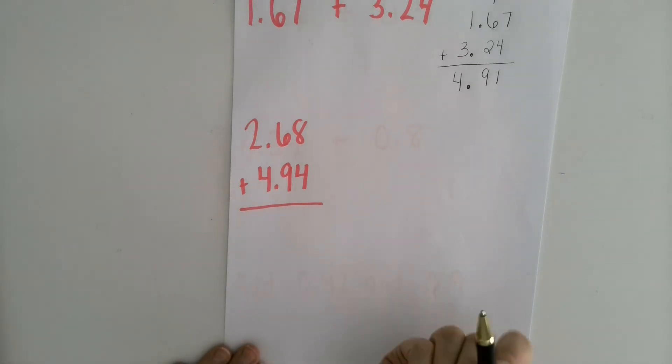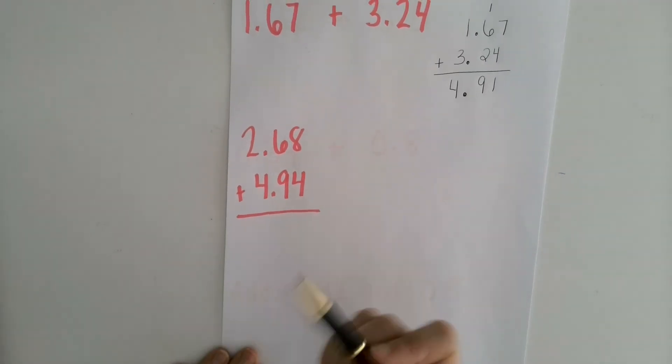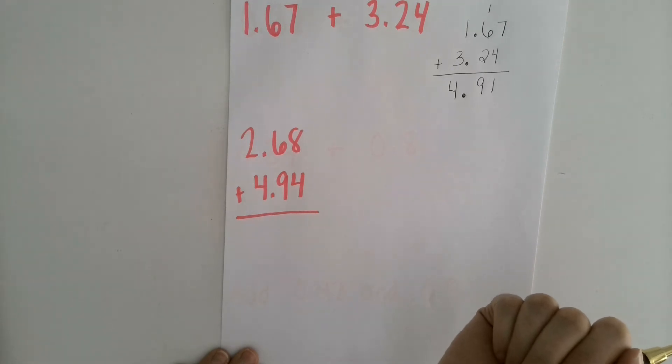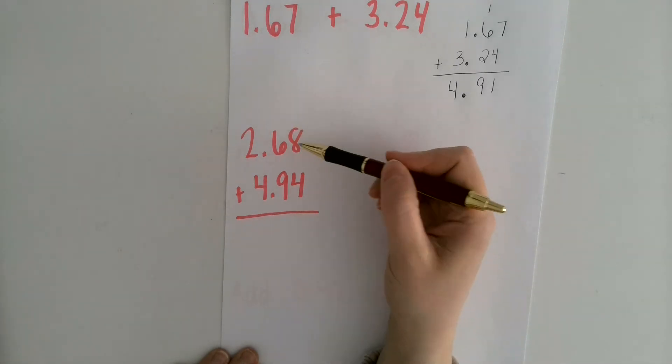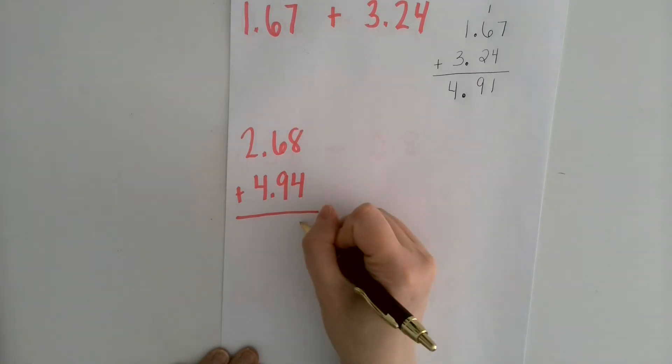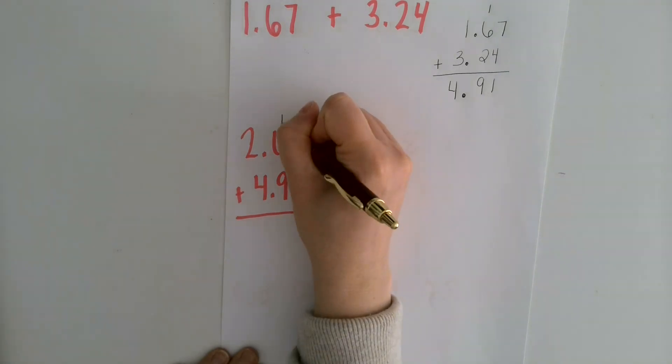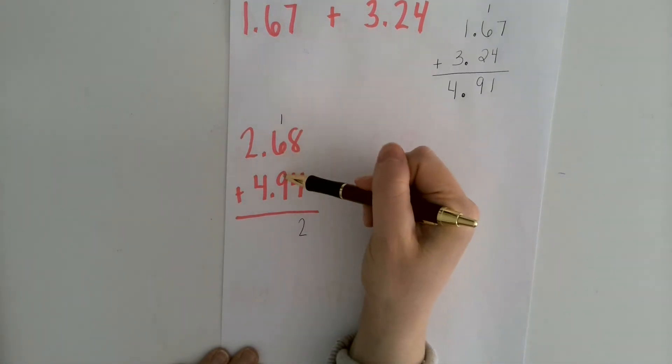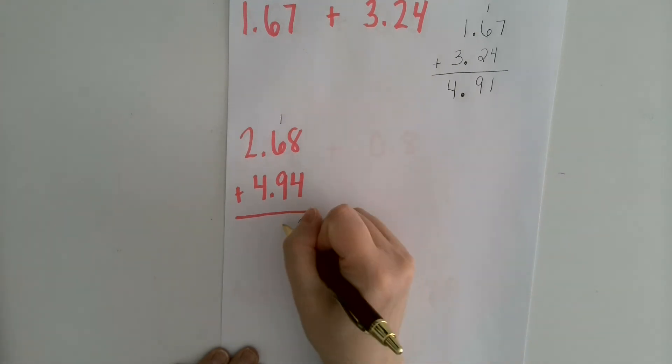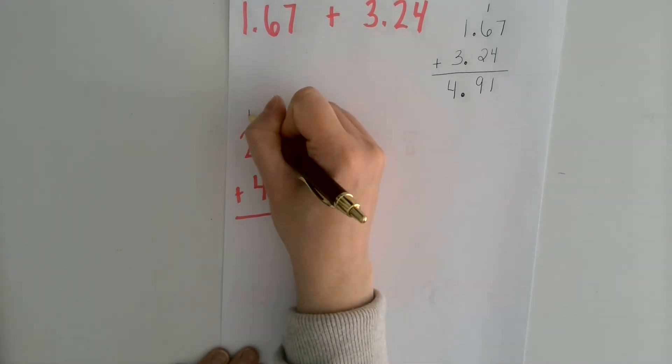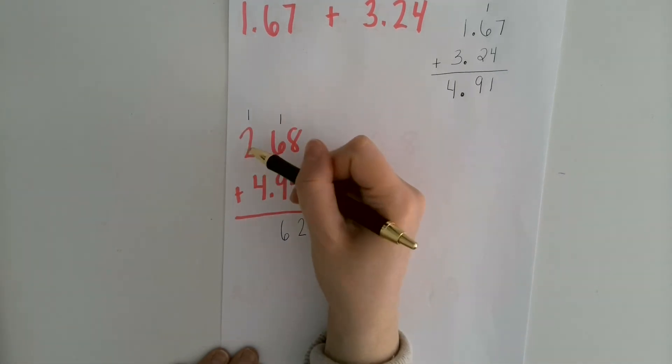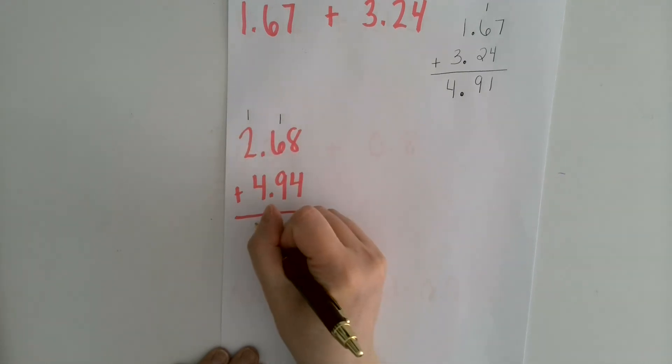This one, very similar type of problem, but it was already written out for me vertically. I didn't have to do any lining up which is nice. So I'm going to start over here. 8 plus 4 is 12. So I'm going to put the 2 there and carry the 1 over. 6 plus 9 is 15 plus 1 more is 16. So I'll put the 6 here and regroup that 1 over here. 4 plus 2 is 6 plus 1 more is 7.